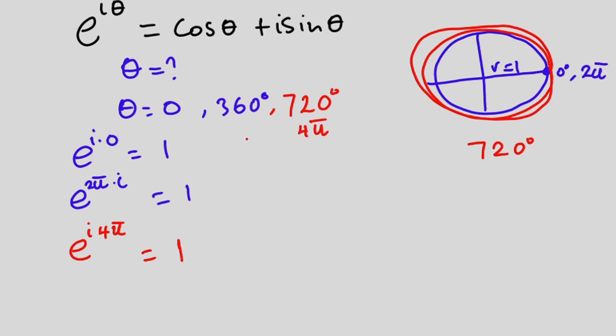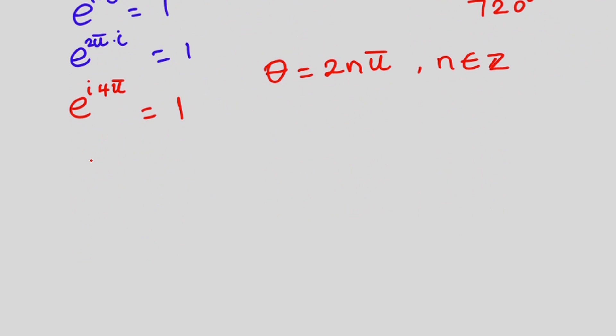So it means that we have so many angles for theta. So let's go ahead and write the general angle for theta. Theta will be equal to 2 times n times pi, where n is an integer. So therefore, on the left-hand side, we're going to have e to the power i times 2n pi is equal to 1.